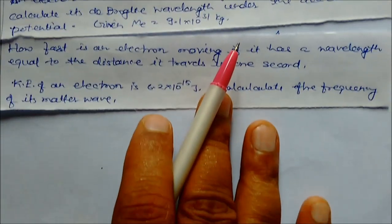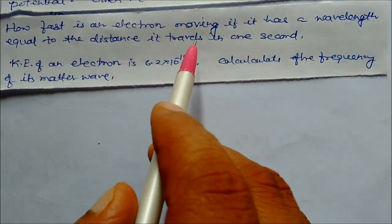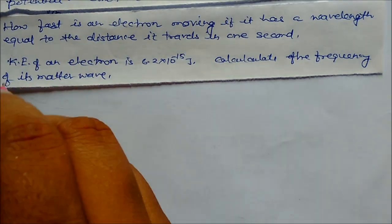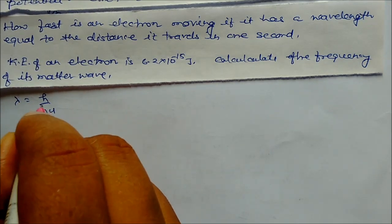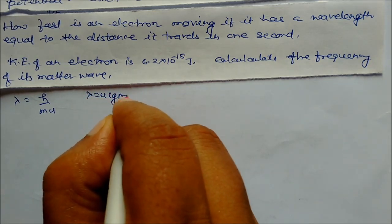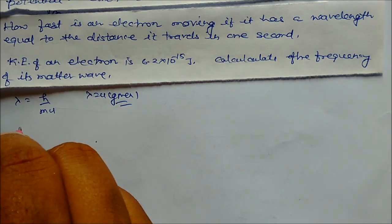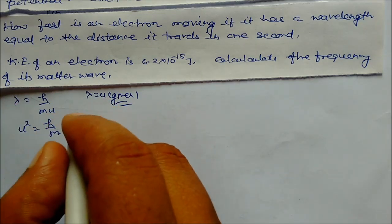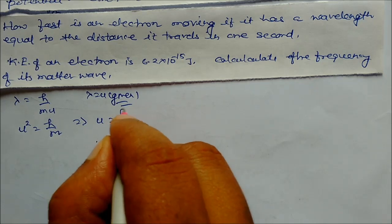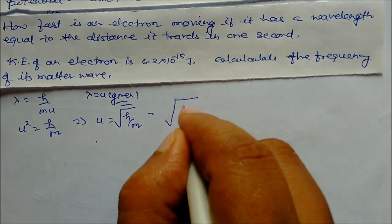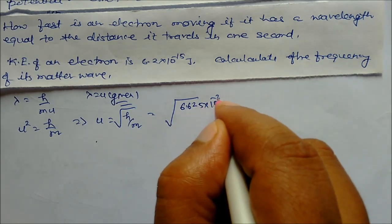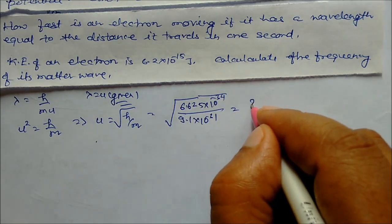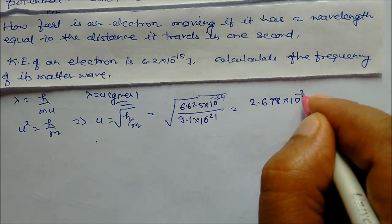How fast is the electron moving if its wavelength equals the distance traversed in one second? Since lambda equals u (distance per second), we write lambda equals h by mu. Substituting lambda equals u gives u² equals h by m. Therefore u equals square root of h upon m. Solving with h = 6.625×10⁻³⁴ and m = 9.1×10⁻³¹, we get u equals 2.698×10⁻² meter per second.